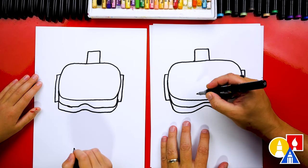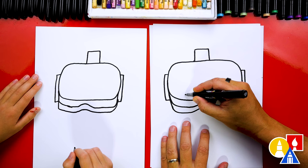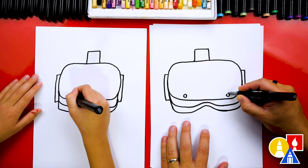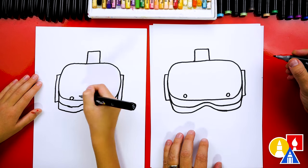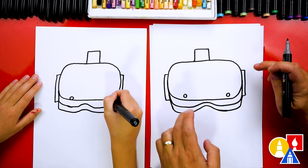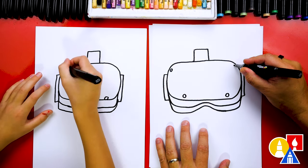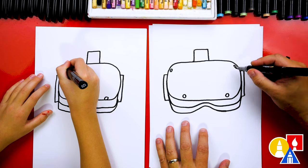And then let's also draw the cameras. We're going to draw a circle right here and a circle over here on this side. And then there's more cameras or sensors up here. We'll draw two ovals right at the very top corner.